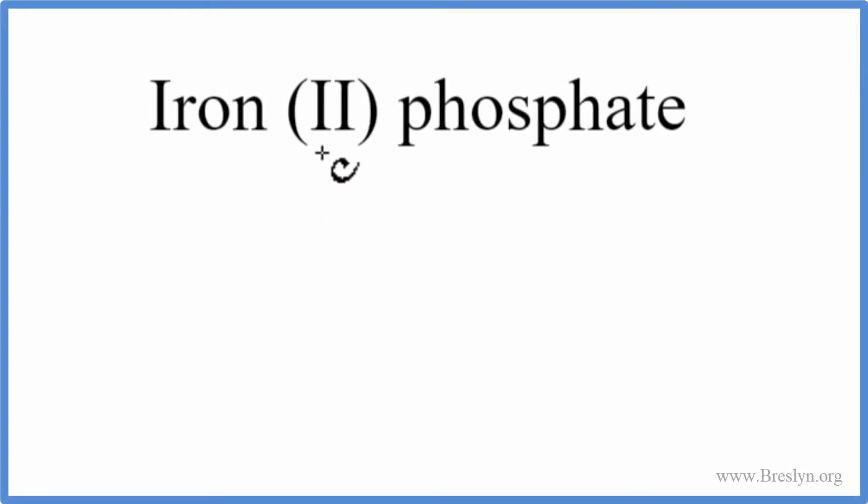To write the formula for iron (II) phosphate, we go to the periodic table and look up iron. That has an element symbol of Fe. And phosphate, that's not on the periodic table. It ends in A-T-E, so it's a polyatomic ion. You either need to memorize this or look it up on a table of common polyatomic ions. Either way, phosphate is PO4 three minus.